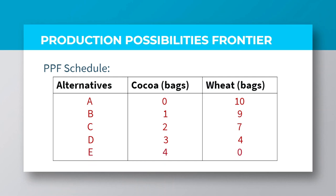At production alternative E, the country is able to produce four bags of cocoa. Comparing that to wheat, you can see that all ten bags of wheat have been sacrificed. So, the opportunity cost of producing at production alternative E, where the country produces four bags of cocoa, is all ten bags of wheat which have been sacrificed to achieve that production target.